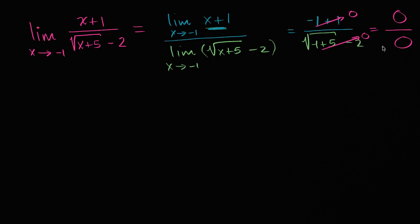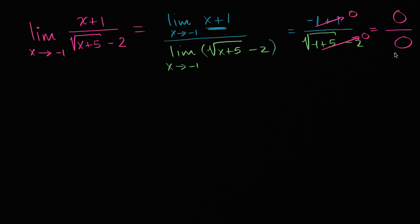When you see that, you might be tempted to give up — there's a zero in the denominator, maybe this limit doesn't exist. If the numerator were non-zero, dividing a non-zero value by zero is undefined and the limit would not exist. But when you have zero over zero, this is indeterminate form, and it doesn't necessarily mean your limit does not exist. As we'll see in this video and future ones, there are tools at our disposal to address this.